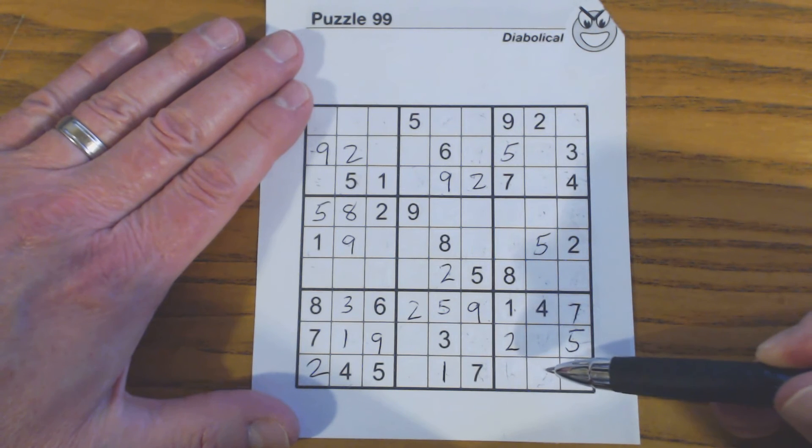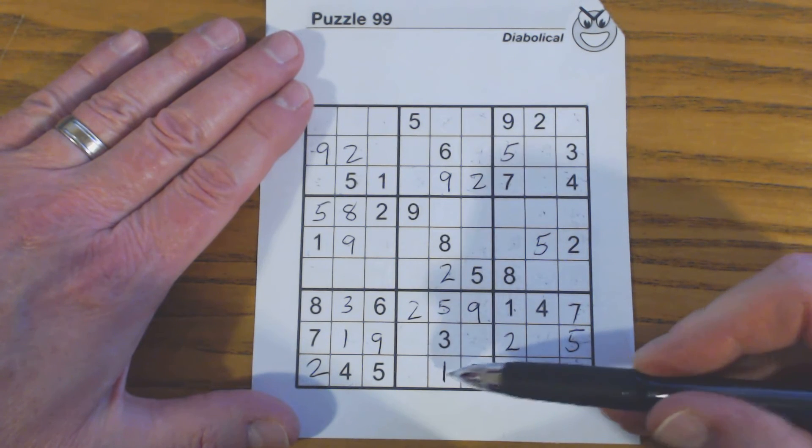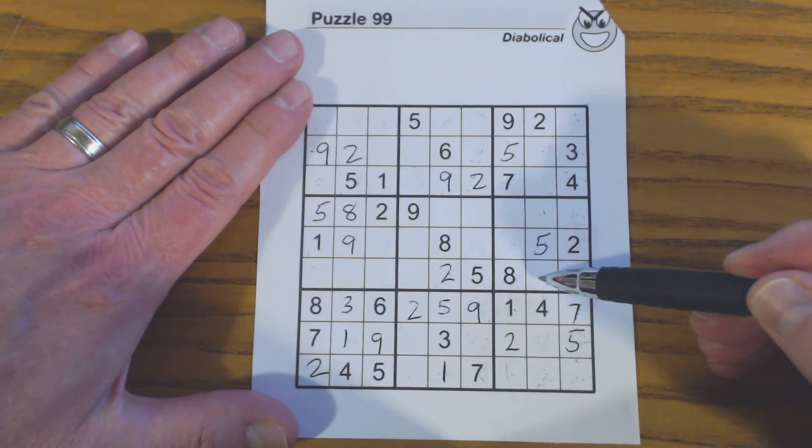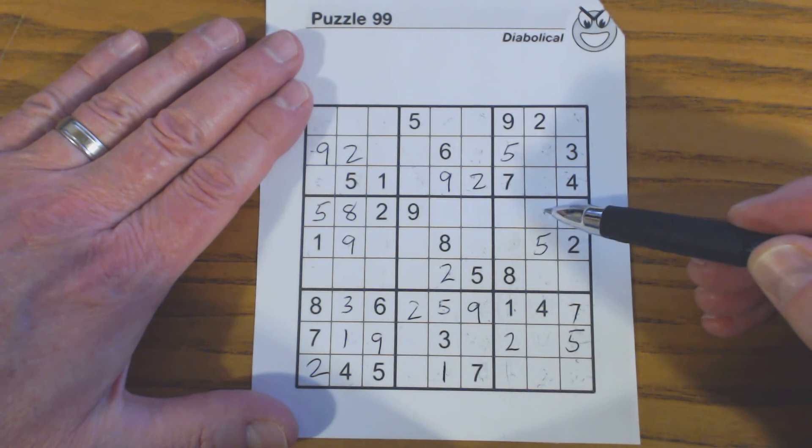Right here we've got 1, 3, 7, 9. So that's a 3 or a 9. This one's a 6 or an 8. This one's got to be 1, 3, 7, or 9. Not much help there.